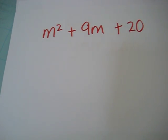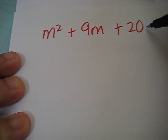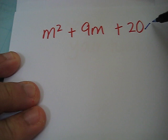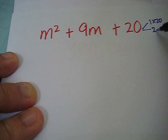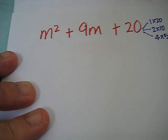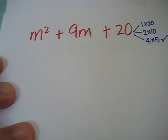Let's try to factorize this using the cross method in 1 minute. 20 can be expressed as 1 times 20, 2 times 10, and 4 times 5. To get 9m, we will check out with this pair.